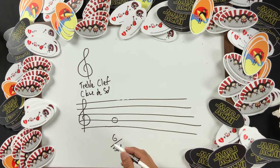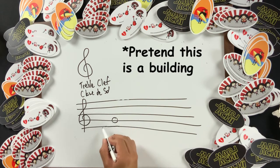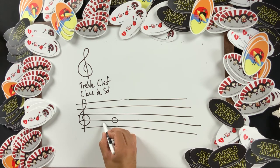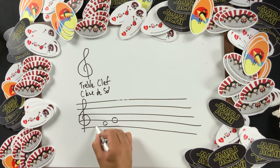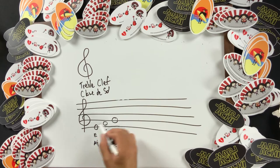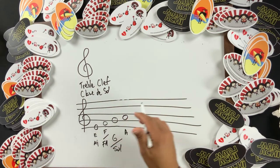Once we have this information, we can use our deductive reasoning to figure out the rest of the notes. Every line and every space is its own unique floor. If I'm on floor G and I go down one floor, that becomes floor F or fa. If I go down another floor, it becomes floor E or mi. What happens when we run out — A, B, C, D, E, F, G — we run out? Just like with numbers, we start repeating; we go back to the beginning.